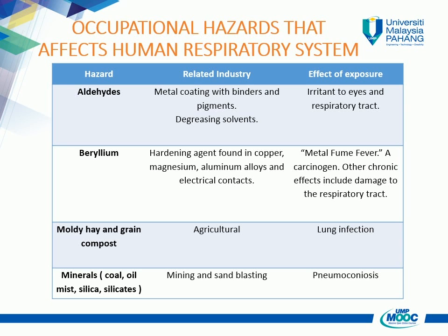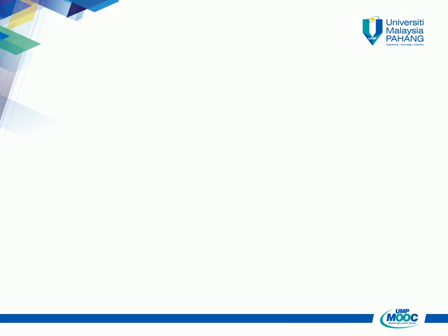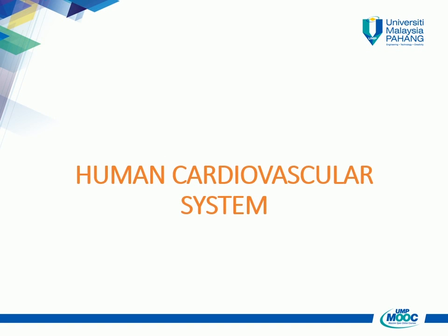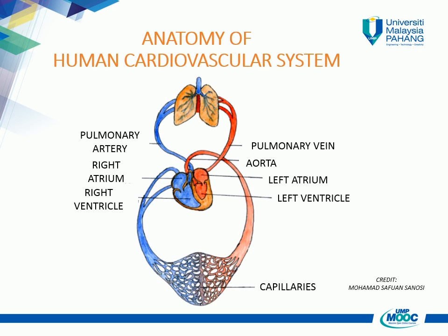Moldy hay and green compost used in agriculture can cause lung infection. Moving on to the human cardiovascular system — it is a system of tubes called blood vessels that carries blood out from your heart to all your body cells and back again.